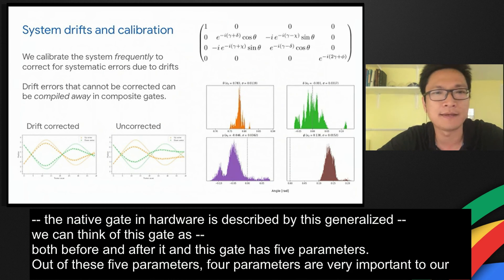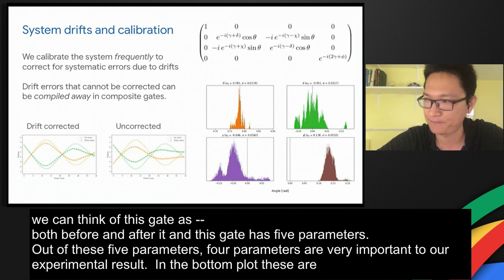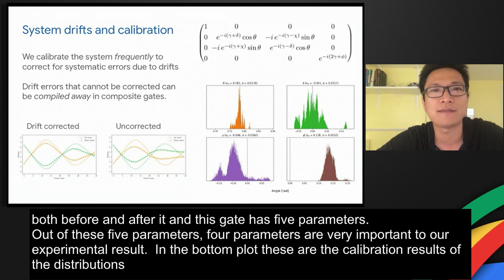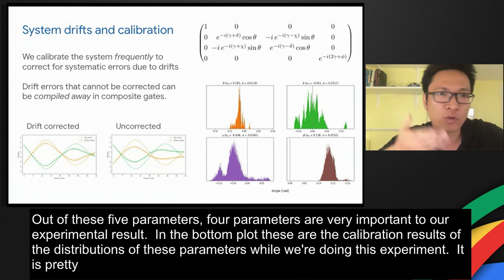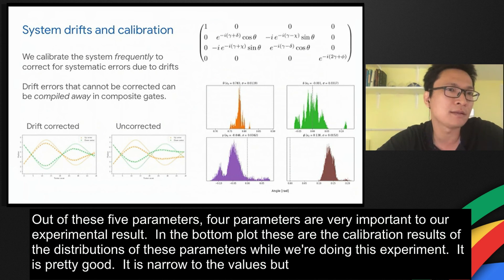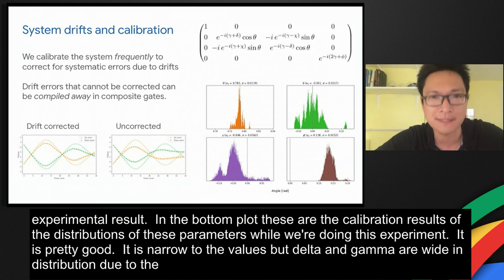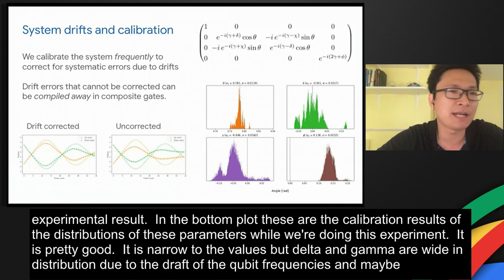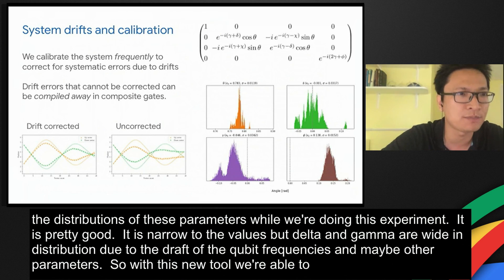One is theta. In the bottom plot, these are the calibration results of the distributions of these parameters while we are doing this experiment. Theta is pretty good. It's narrowly distributed to the desired values. But these single qubit phases, delta and gamma, they have a very wide distribution due to the drift of the qubit frequencies and maybe other control parameters. With this new calibration tool, we are able to correct these drift errors and make the results much better.